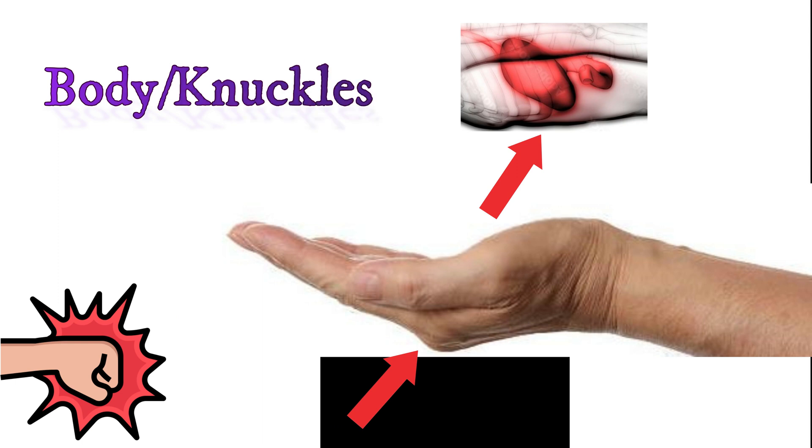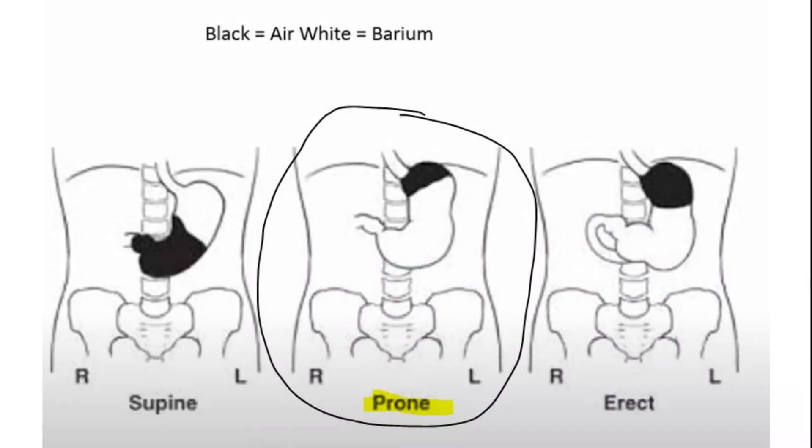So when there's barium in the body, knuckles are on the table. And that is when the patient is prone, laying on their back. Remember the smiley face.